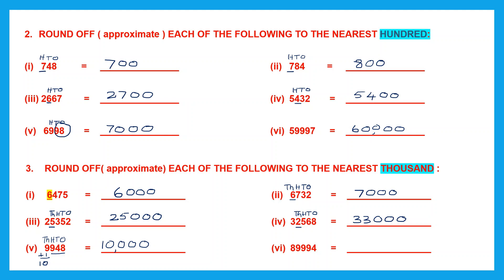For question 6: the digit in the thousands place is again 9. Look at the digit to its right — it's more than 5. So the digit in the thousands place will now change to the next digit by adding 1. 9 plus 1 is 10, carry 1. 8 plus 1 is 9 — so we have 90. Then look at the other 3 digits — we're going to replace them all with 0s: 1, 2, 3. So we have 90,000.